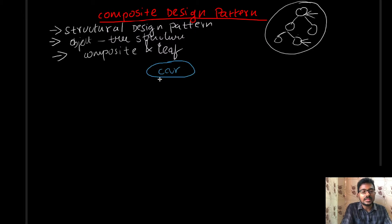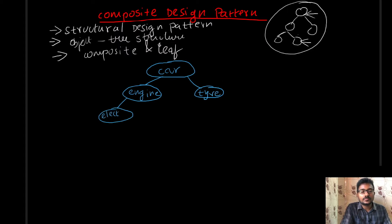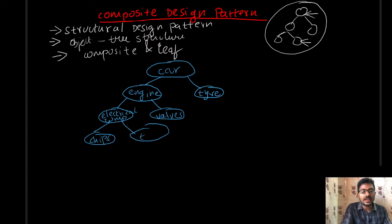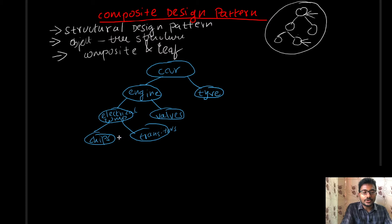The car would have some electrical components. The engine would have some valves, and the electrical components would have some electrical chips and some transistors. This is the tree structure of a complex object called car. If some operation can be applied on a leaf object, then that operation should also be applied on the composite and other leaf objects.